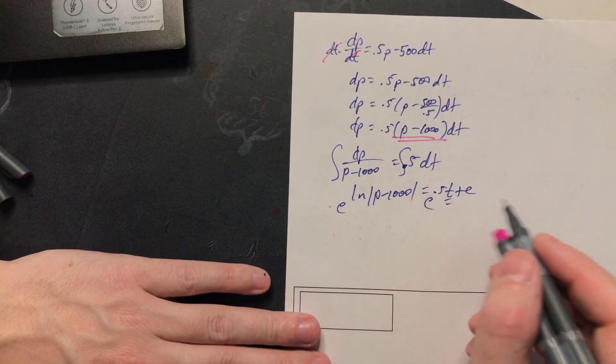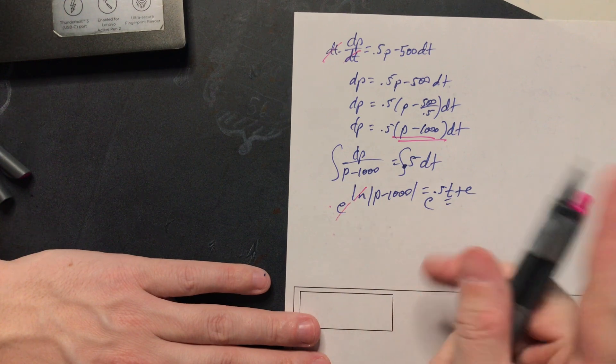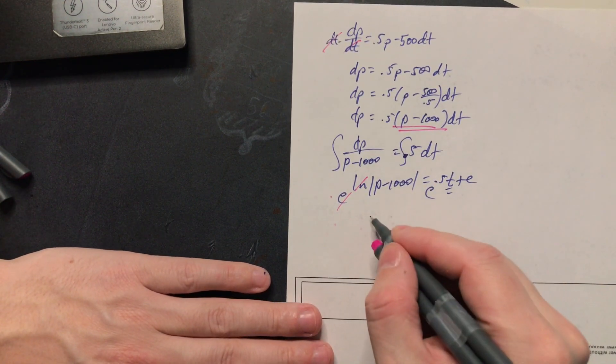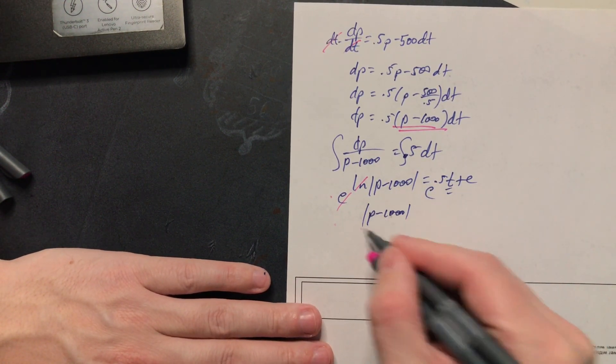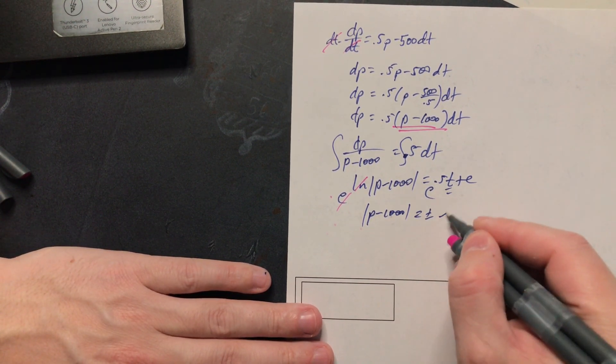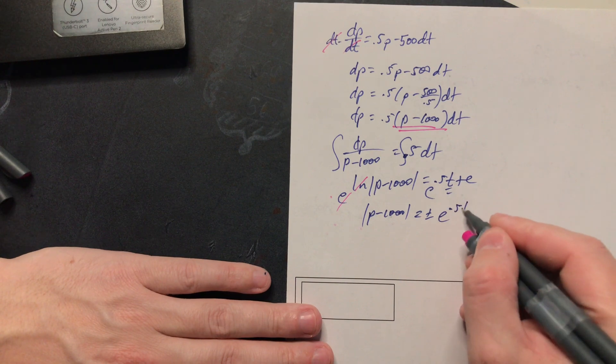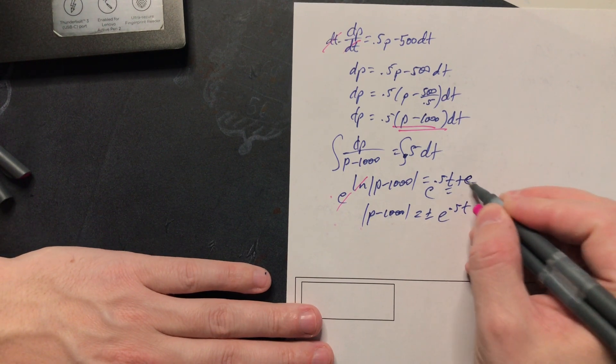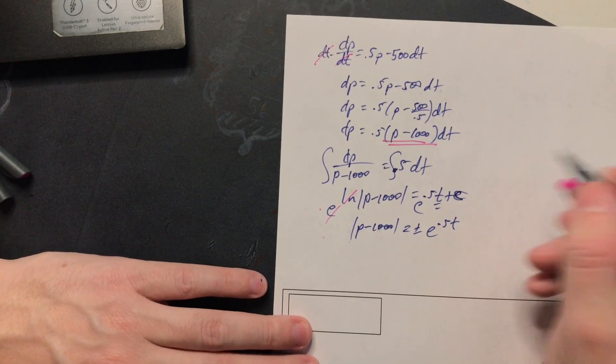Now you can just exponentiate both sides this way when you do that this will cancel with this. So that means we have p minus a thousand is equal to plus or minus and then e raised to that 0.5 t and then this is a constant so there's a basic rule that you can apply.